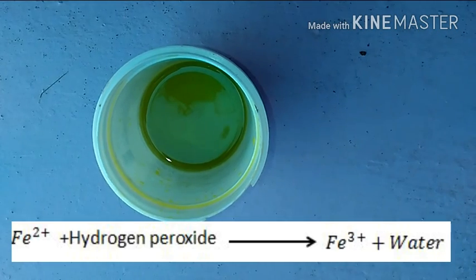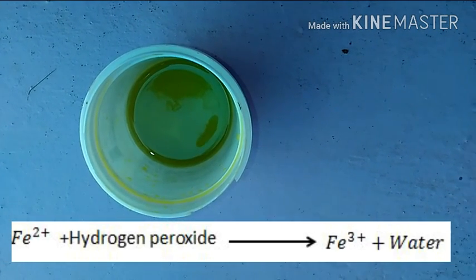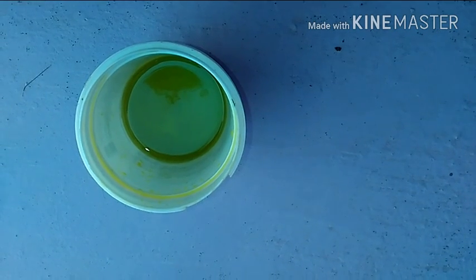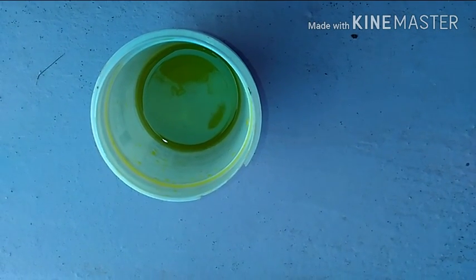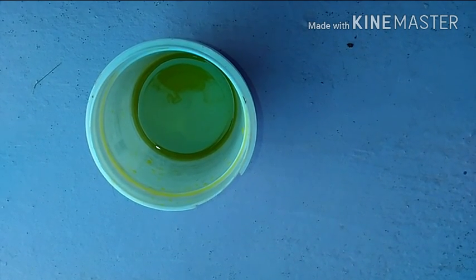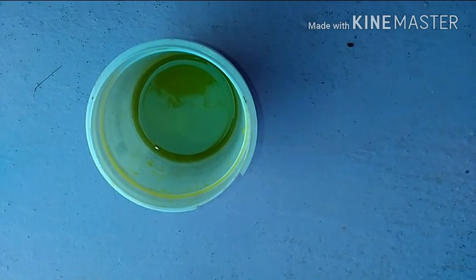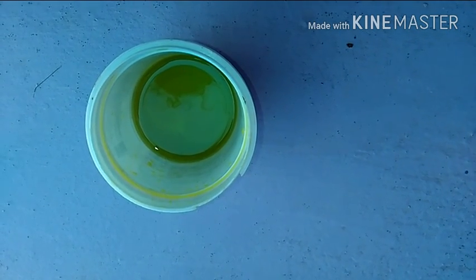This results in the formation of ferric chloride, FeCl3. The oxidation state of iron is Fe3+. So the ferrous chloride contains Fe2+, and hydrogen peroxide oxidizes Fe2+ ion into Fe3+.